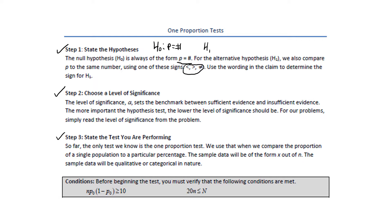The null hypothesis H sub 0 is the one that we always assume to be true, and we're going to try to prove that H sub 1 is true. H sub 0 is like the condition in a jury trial where we assume the defendant is innocent, and then we try to gather enough evidence to show that that can't be true, and we accept the alternative hypothesis H sub 1 — the defendant is guilty.